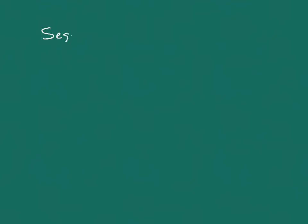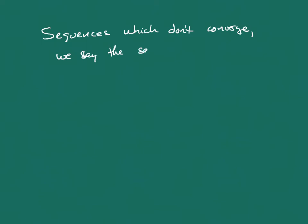When a sequence doesn't converge, we say the sequence diverges. Continuing with the analogy of the sequence living on a particular curve, if I had a sequence that looked like 2 + 3^n, what does this thing really look like as a function?